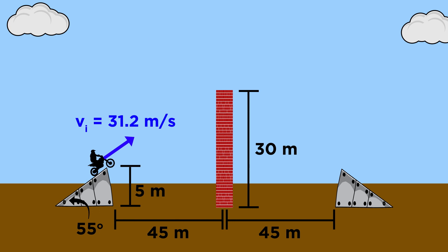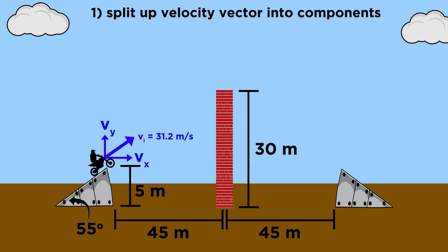Let's find out how we did. The first thing we have to do is split up the velocity vector into x and y components. As he leaves the ramp, this is the velocity vector, and the x component will therefore be thirty-one point two cosine fifty-five, which is seventeen point nine meters per second.